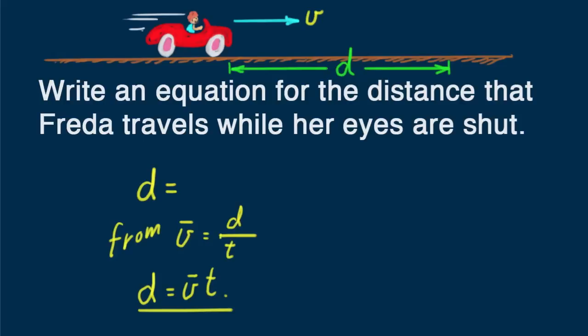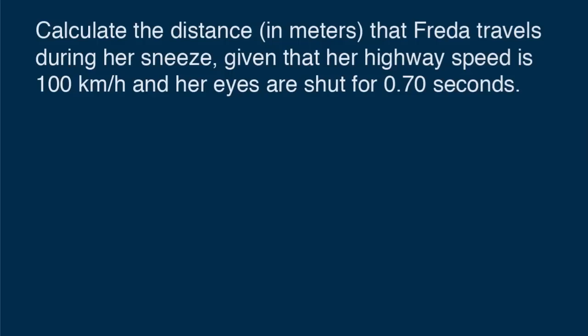Let's put some numbers in here. Calculate the distance in meters that Freda travels during her sneeze, given that her highway speed is a hundred kilometers per hour and her eyes are shut for 0.70 seconds. Here we're asked to find the distance d in meters while speed is given in kilometers per hour. Our task is to convert a hundred kilometers per hour to meters per second.